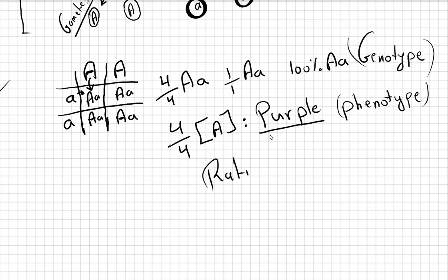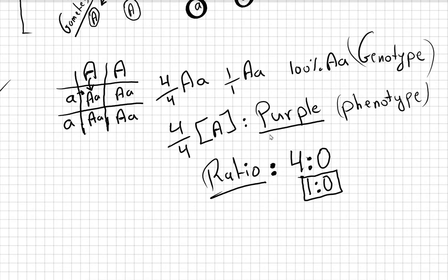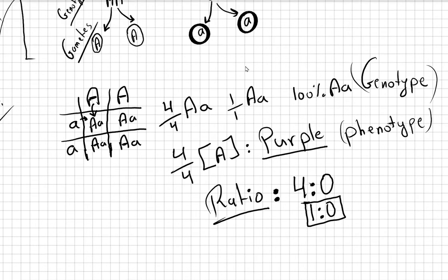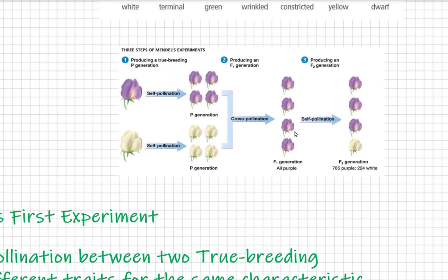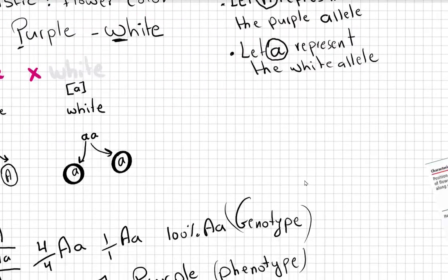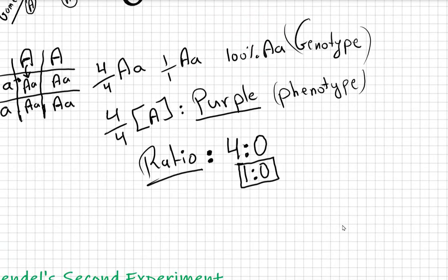The ratio is 1 to 0: for every four purple there are zero white, so 0% white. This matches the result of Mendel's first experiment where all offspring were purple. This generation is called the F1 generation, and all members are Aa.